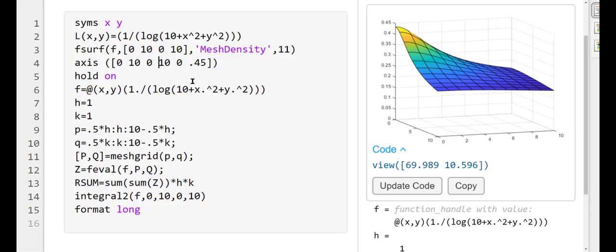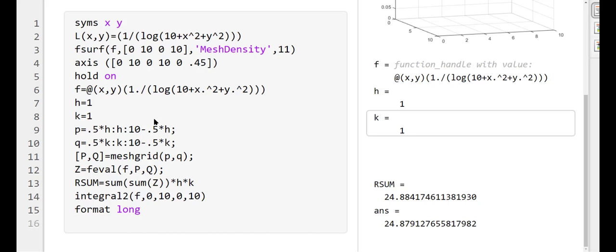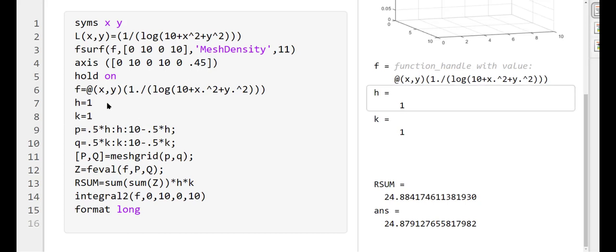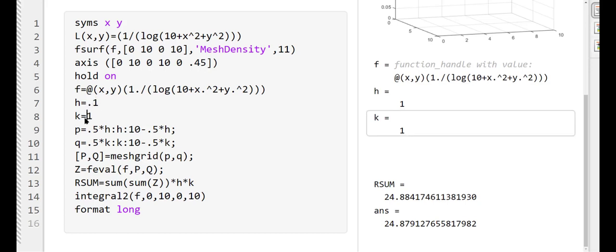Now the way the book does it is that it writes an M-file in which you can enter a different function with different subintervals and it keeps giving the values. This is a much more watered-down version of it.